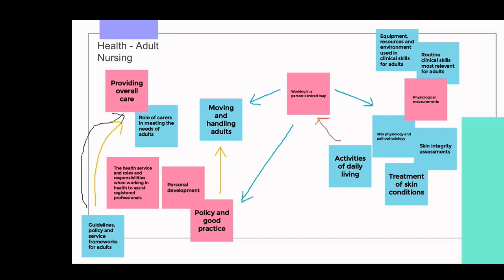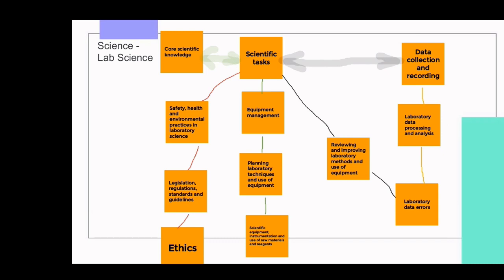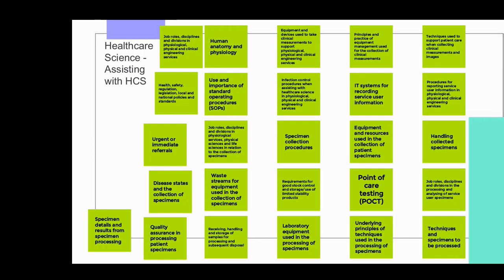For the laboratory science example, 'scientific tasks' was placed centrally, with everything else branching from or feeding back into it. One theme combines scientific tasks with safety, health, environmental practice, legislation and ethics. A second theme covers scientific tasks, equipment management, and planning. Data collection, recording, and core scientific knowledge were identified as feeding into both of those themes, so there would be an expectation that they appear across them.